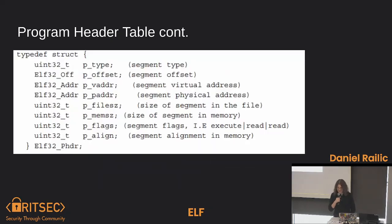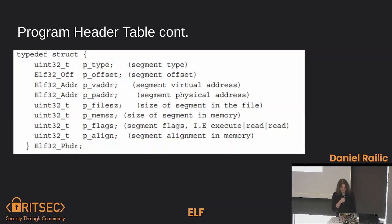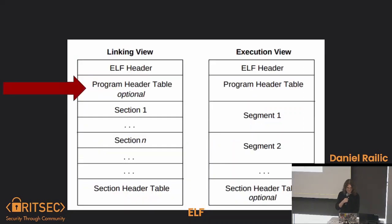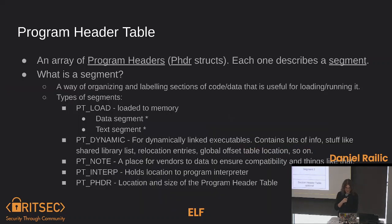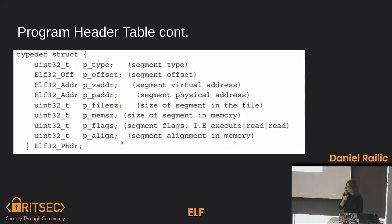That's what the struct looks like. Remember, the program header table is just going to be an array of these structs. This is an ELF32 example. It describes the type — which are all those types we just covered — and then different ways to find it and where it's going to be.